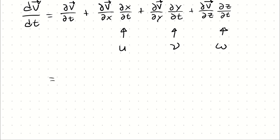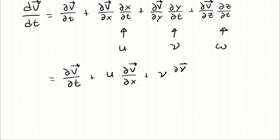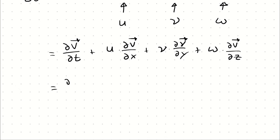Making that substitution, we write this as the partial derivative of velocity with respect to time, plus u times the partial derivative of velocity with respect to x, plus v times the partial derivative of velocity with respect to y, plus w times the partial derivative of velocity with respect to z. We can then pull u, v, and w out and write that as a gradient of the velocity vector, giving us the partial derivative of V with respect to time plus the velocity vector dotted with the gradient of the velocity vector.